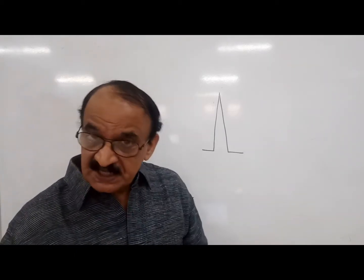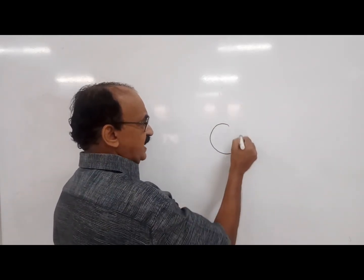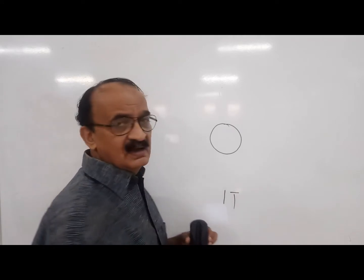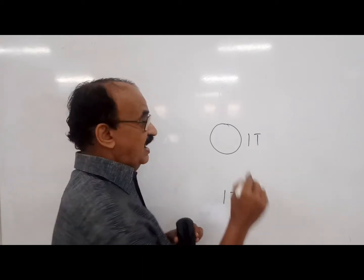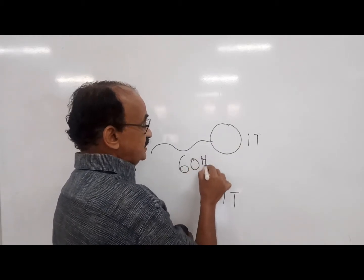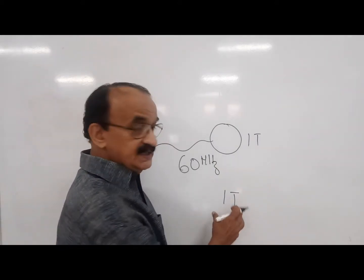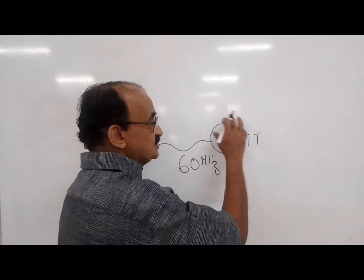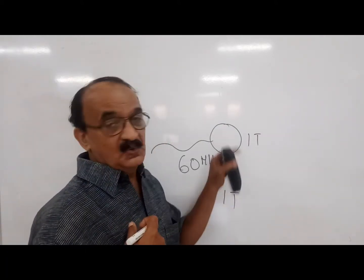When you consider a bare or naked proton and we give a field strength of one tesla, the proton is really getting one tesla. We can then give a radio frequency radiation of, say, 60 megahertz. The proton absorbs the radiation, because whatever magnetic field we apply to the naked proton, it gets exactly that field — there is no other force to counteract the applied magnetic field.